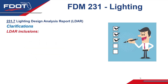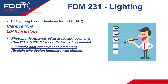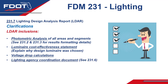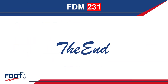Finally, looking at Section 231.7 for the Lighting Design Analysis Report, or LDAR, some clarifications were made to help summarize the inclusions needed: a photometric analysis of all areas and segments referencing appropriate FDM sections; the luminaire cost-effective statement explaining why the design luminaire was chosen; voltage drop calculations; a lighting agency coordination document; FAA coordination documents where applicable; and the new light spill coordination summary. With that, we've reached the end of our 2023 Design Manual Update Training for Chapter 231 for Lighting. Thank you for your time and attention.